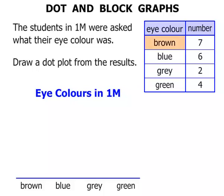Let's firstly look at brown. There were seven students who had brown eyes. So we go one, two, three, four, five, six, seven. Seven dots represent seven students.